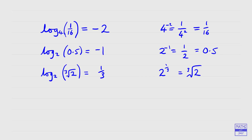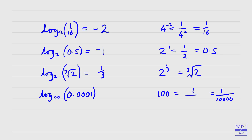Let's have a nice big base this time — base 100 — and we'll have the decimal 0.0001. Our base is 100, so we've got to think: 100 to the power of something equals 0.0001. Let's think of that as a fraction: it's 1 over 10,000. We want to write that as 1 over 100 to the power of something. Since 100 squared is 10,000, it's a negative power — 100 to the power of negative 2 equals 0.0001. So our index is negative 2.